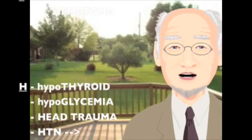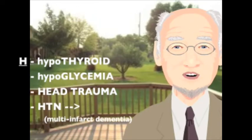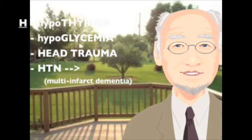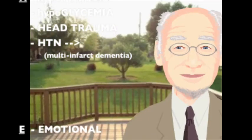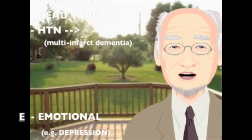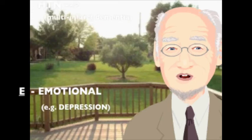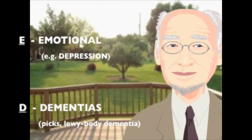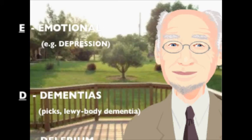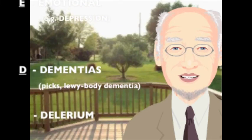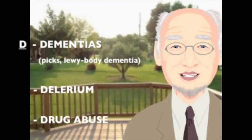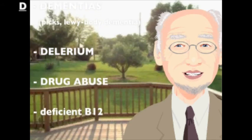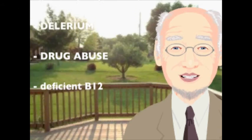S is subdural hematoma. H is hypothyroidism, hypoglycemia, head injury, and hypertension, which can give you a multi-infarct dementia. E is for emotional problems like depression. And finally, D — your dementias like Pick's; there's also delirium, drug abuse, and of course deficiency of vitamin B12.